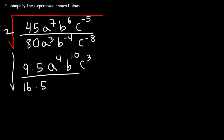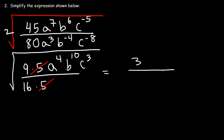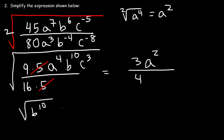Now we still have the square root. We can cancel the 5. The square root of 9 is 3, and the square root of 16 is 4. The square root of a to the 4th is simply a squared — you divide 4 by 2 and you get 2. The square root of b to the 10th is b to the 5th power.